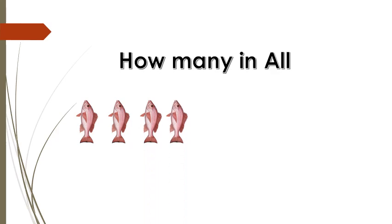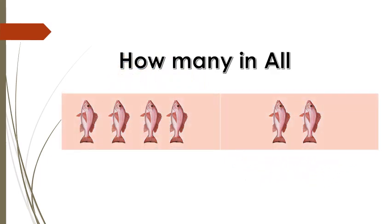Let's move to our topic. How many in all? Here there will be two boxes. It contains number of fishes. Can we see them? 1, 2, 3, 4, 5, 6. So two boxes are there. Box A contains 4 fishes and box B contains 2 fishes. Can you say how many in all? How many fishes here in all? Yes, 6 fishes in all.